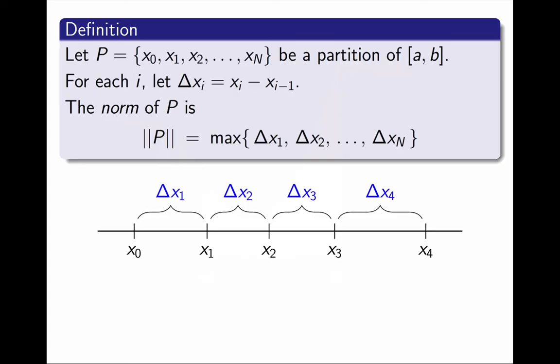Then, I define the norm of the partition P as the largest of the lengths of the subintervals, and I will represent the norm of P as ||P|| between double vertical bars. The norm is basically a measure of how good a partition is. If the norm is small, then all the subintervals have small lengths, and hence all the rectangles are very thin. The limit I wanted to take is the limit as the norm of the partition approaches 0.